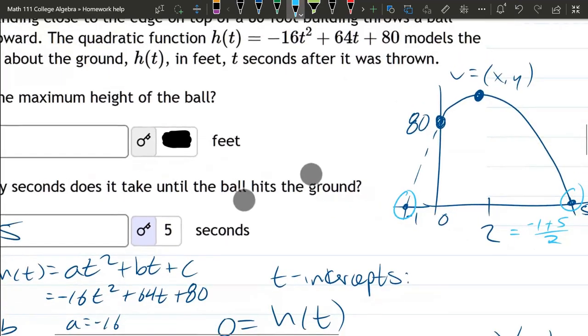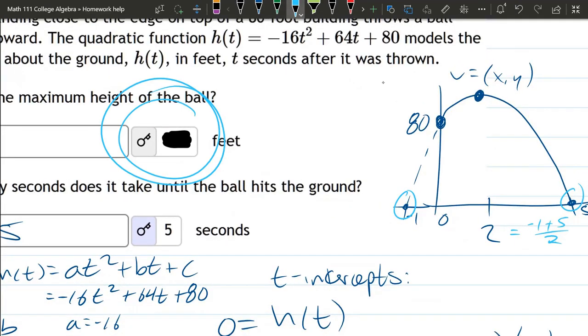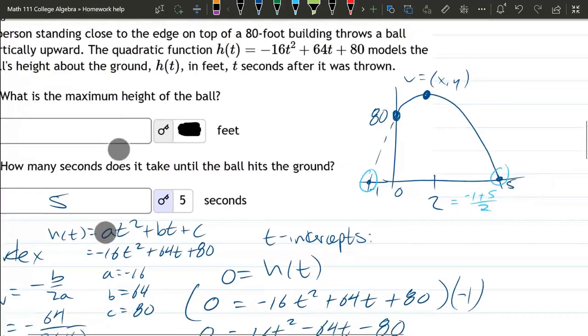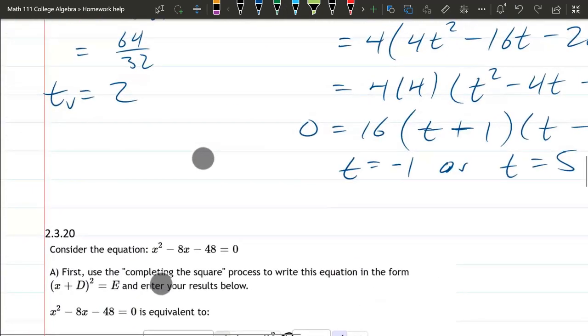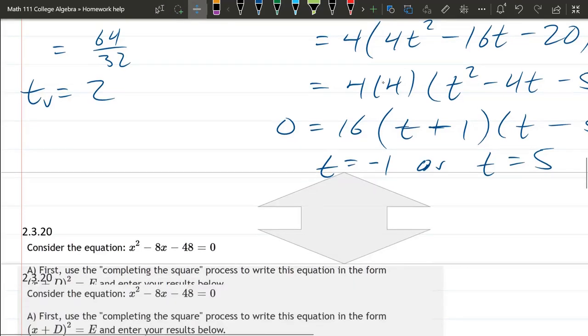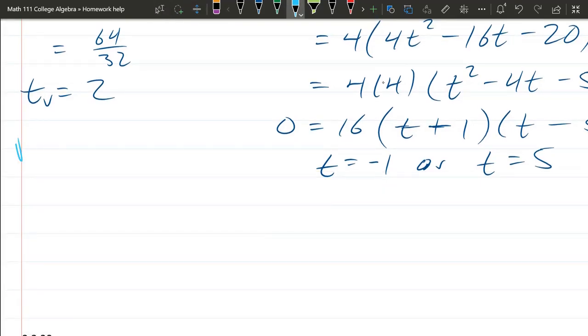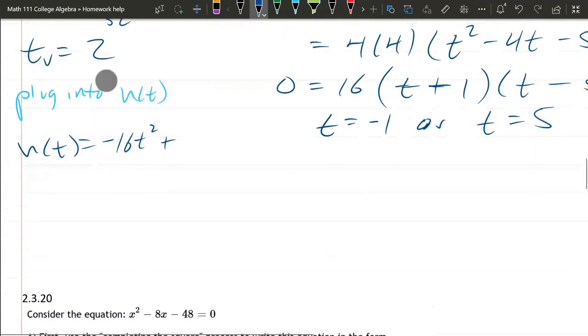That's not the answer right here. That's how many seconds. That's not how many feet. So how do we find the feet? We just plug in that t value into our original h(t) function. So we'll do that next. Plug into h(t). So I'm just going to rewrite h(t). Then I will plug in the values.